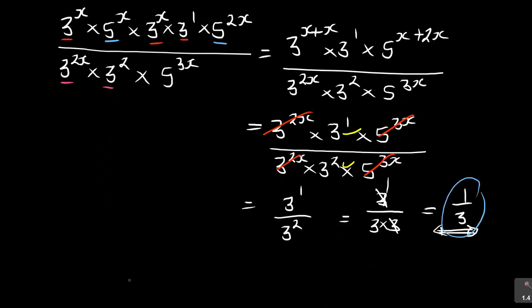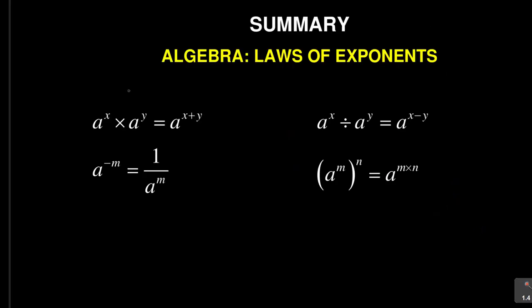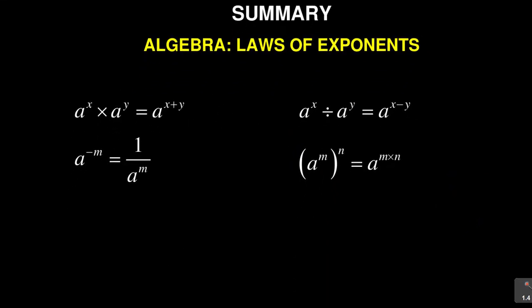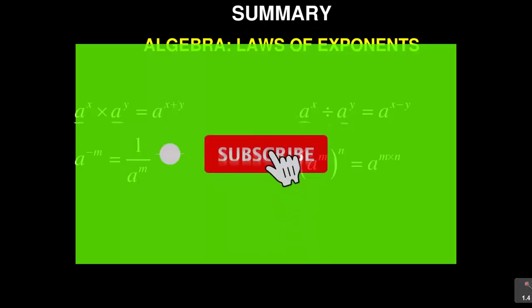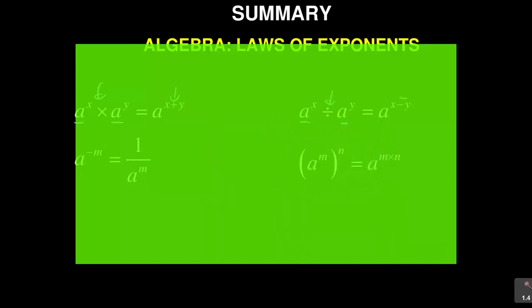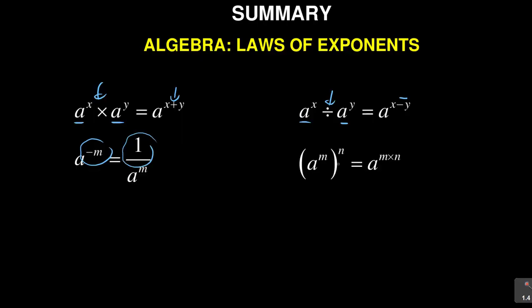That is how you use the laws of exponents. In summary: the first two laws require the bases to be the same — if multiplying, you add the exponents; if dividing, you subtract. If there is a negative exponent, you introduce a fraction. If a bracket separates the exponents, you multiply them. We've come to the end of our lesson. Thank you.